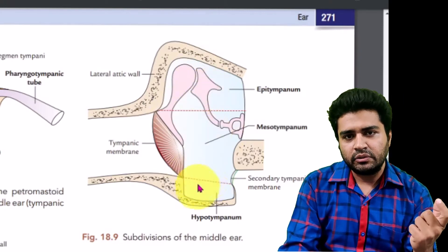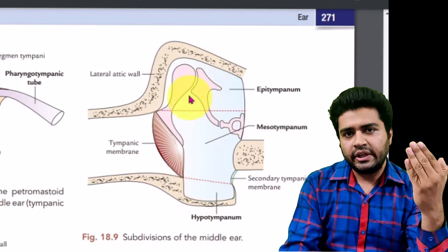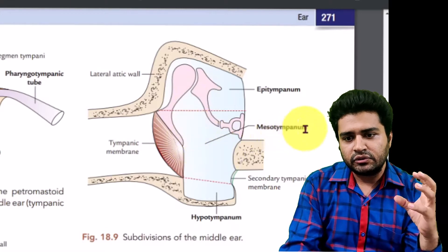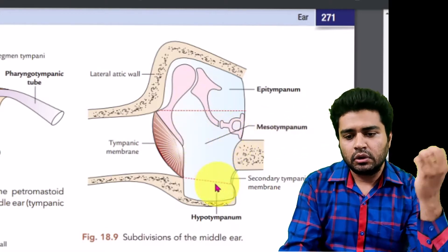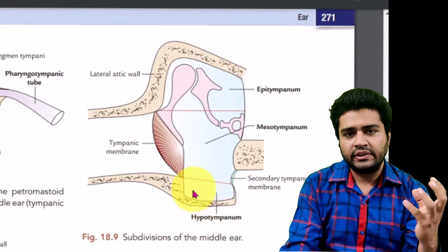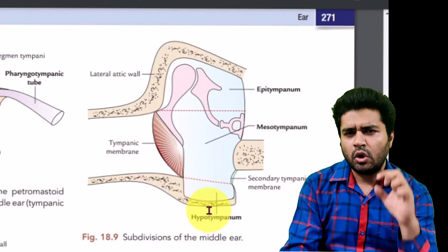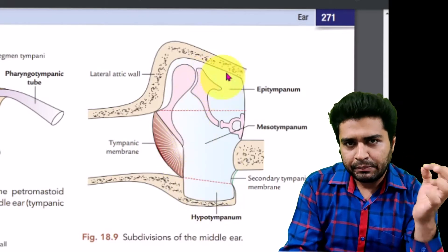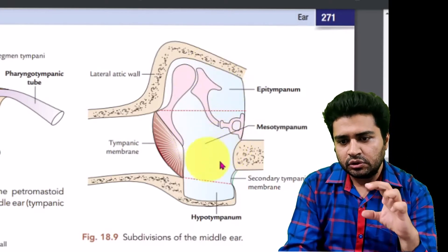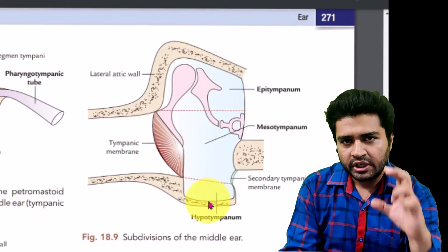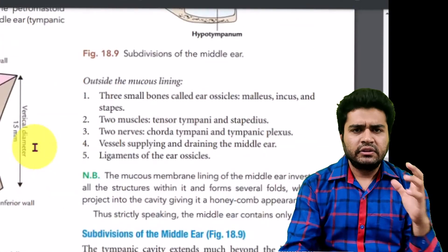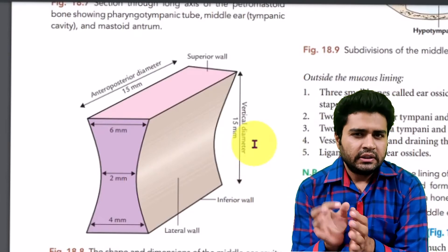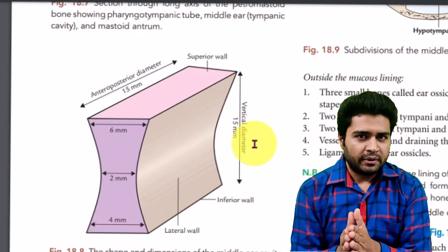That is how the middle ear cavity is divided into three parts. The upper part is known as the epitympanum. At the level of the tympanic membrane it is known as the mesotympanum, and on the lower side it is known as the hypotympanum. When asked which part of the middle ear cavity is the shortest, the answer is the mesotympanum.